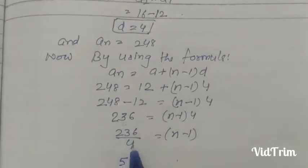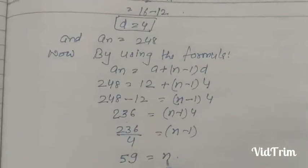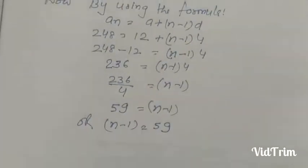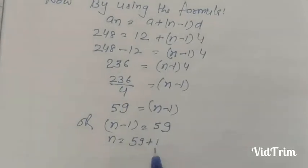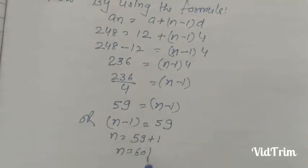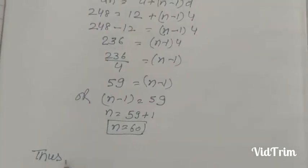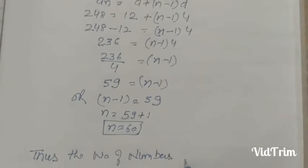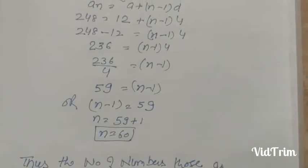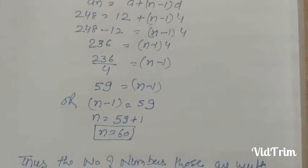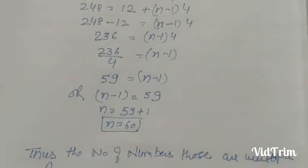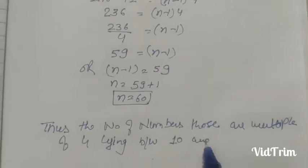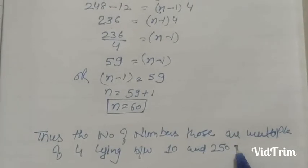Now 4×5 is 20 and 4×9 is 36, so 236÷4 = 59. Therefore 59 equals n minus 1, or n minus 1 equals 59, giving n equals 59 plus 1, so n equals 60. Thus the number of multiples of 4 lying between 10 and 250 is 60.